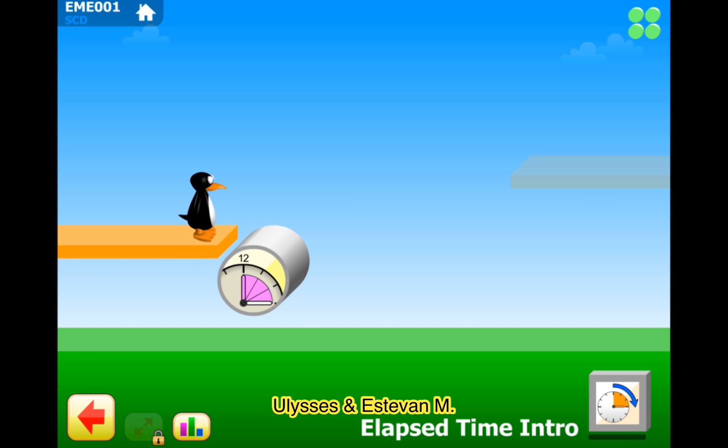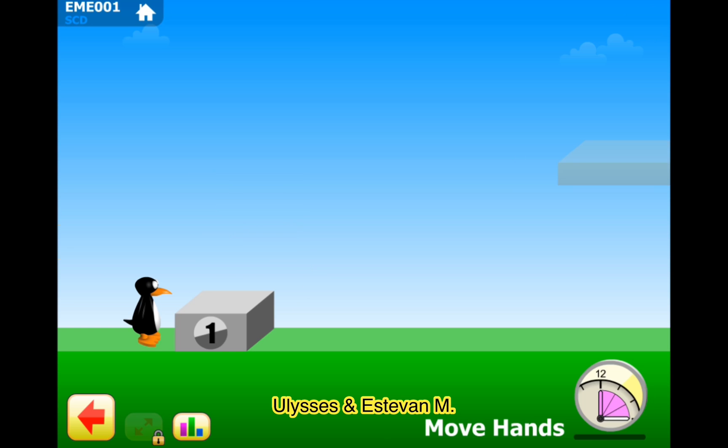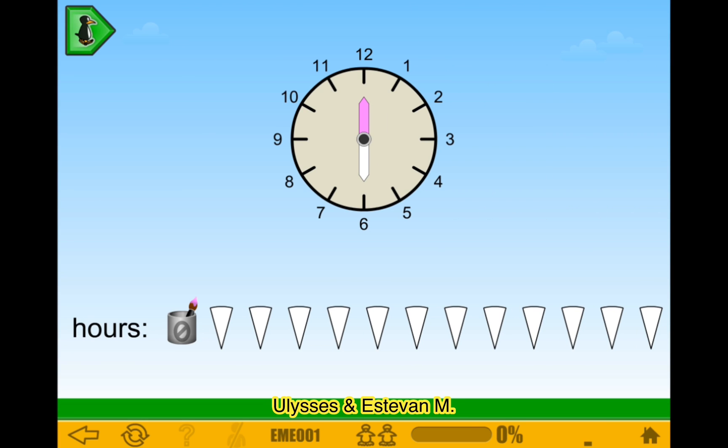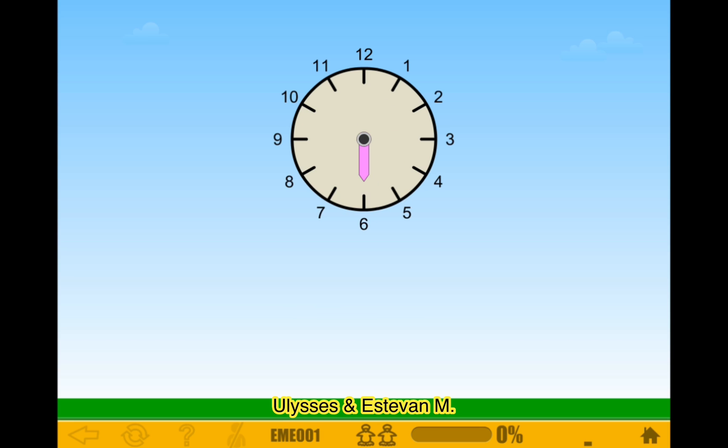Elapse time intro. Level one. Puzzle one. Move hands. Level one. Okay, so this one has to go... It's going to be six hours because it's going to take six times until I can get to the other hand. There we go.